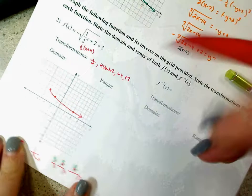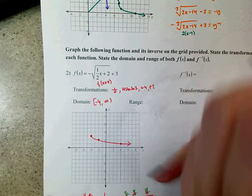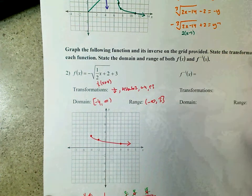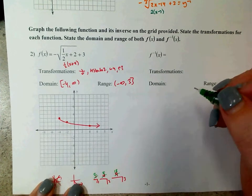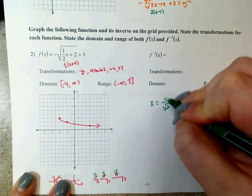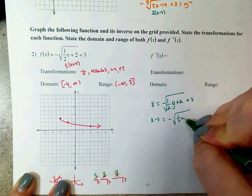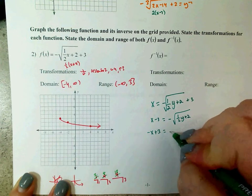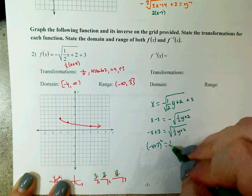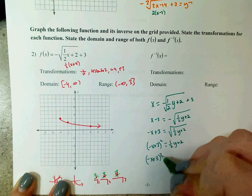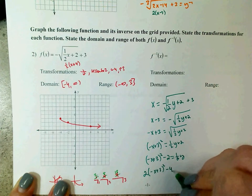Domain: farthest left is negative 4, farthest right is infinity. Range: lowest is negative infinity, highest is 3. For the inverse, I switch x and y: x equals negative the square root of (one half y plus 2) plus 3. Subtract 3, divide by negative, square both sides. Then subtract 2, multiply by 2: 2 times (negative x plus 3) squared minus 4 equals y. So the inverse is 2 times (negative x plus 3) squared minus 4.